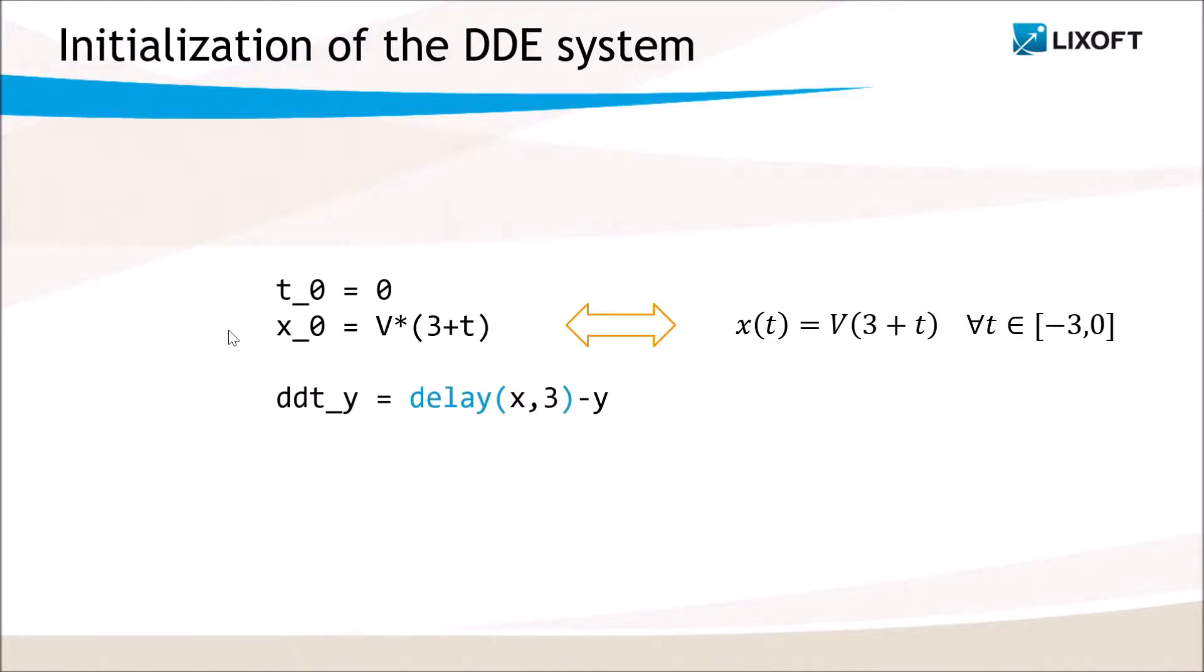Notice that it is possible to have varying initial conditions if the initial values can be analytically computed. For example, x can be defined as a linear variable of time between minus 3 and 0, like this.